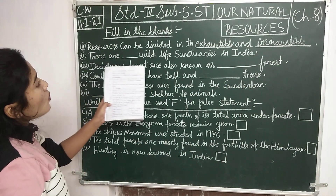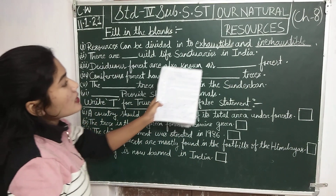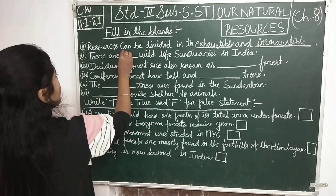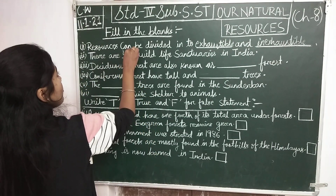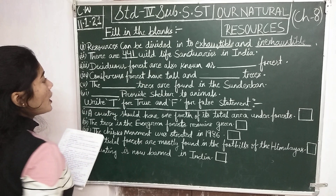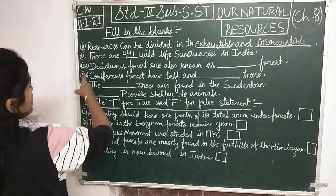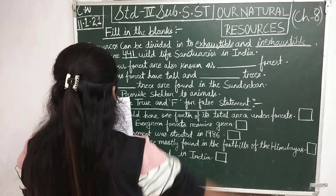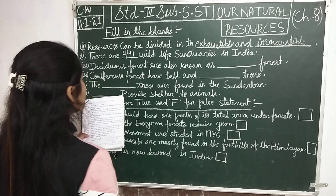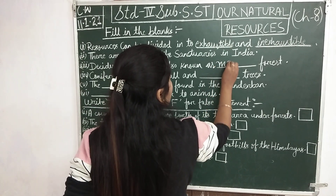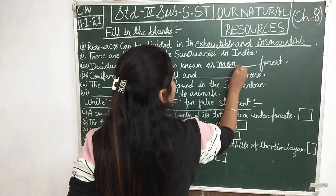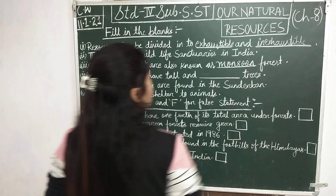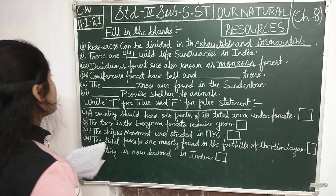Number 2: there are 441 wildlife sanctuaries in India — 441. Number 3: deciduous forests are also known as monsoon forests. Monsoon is spelled M-O-N-S-O-O-N.